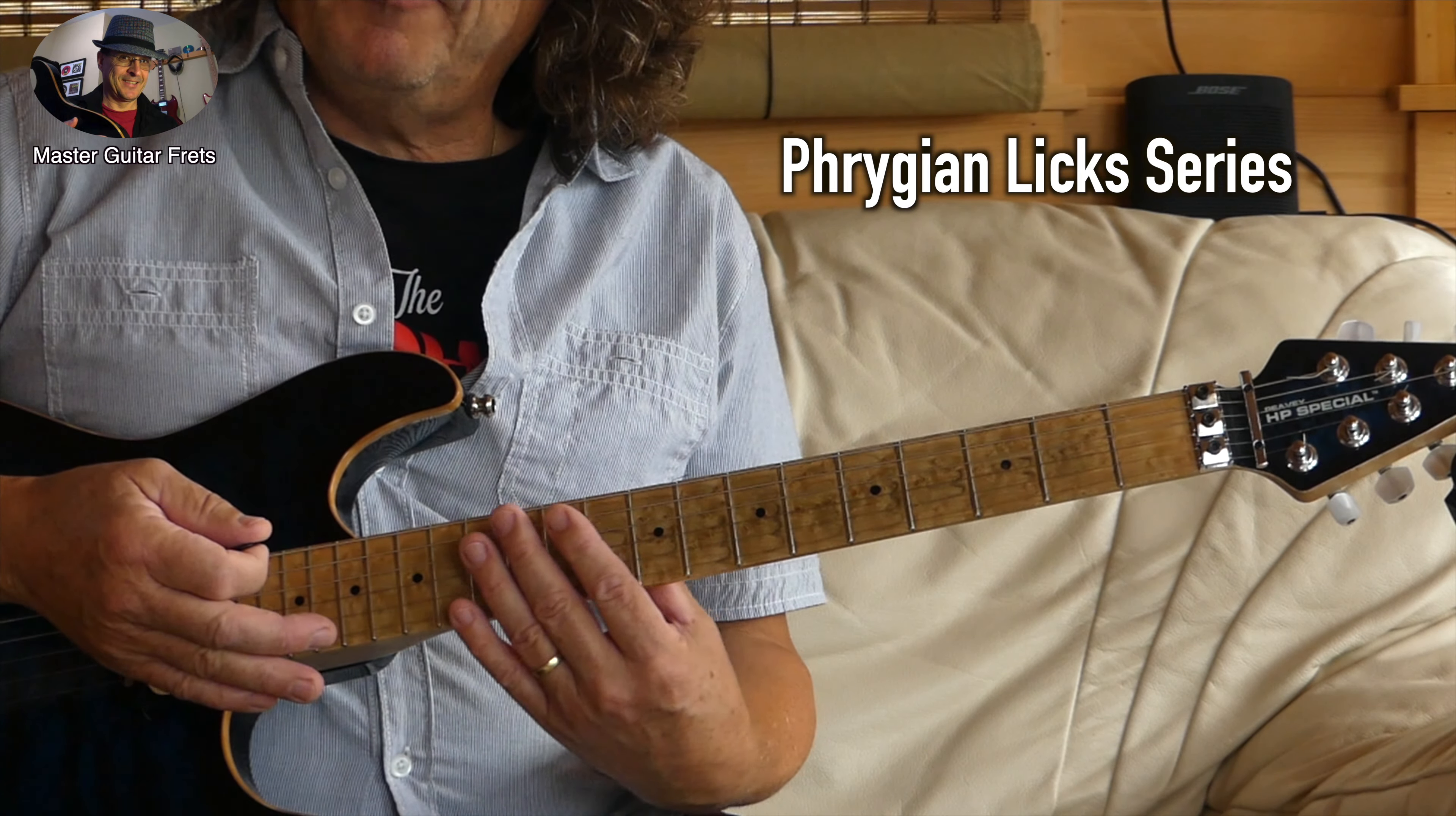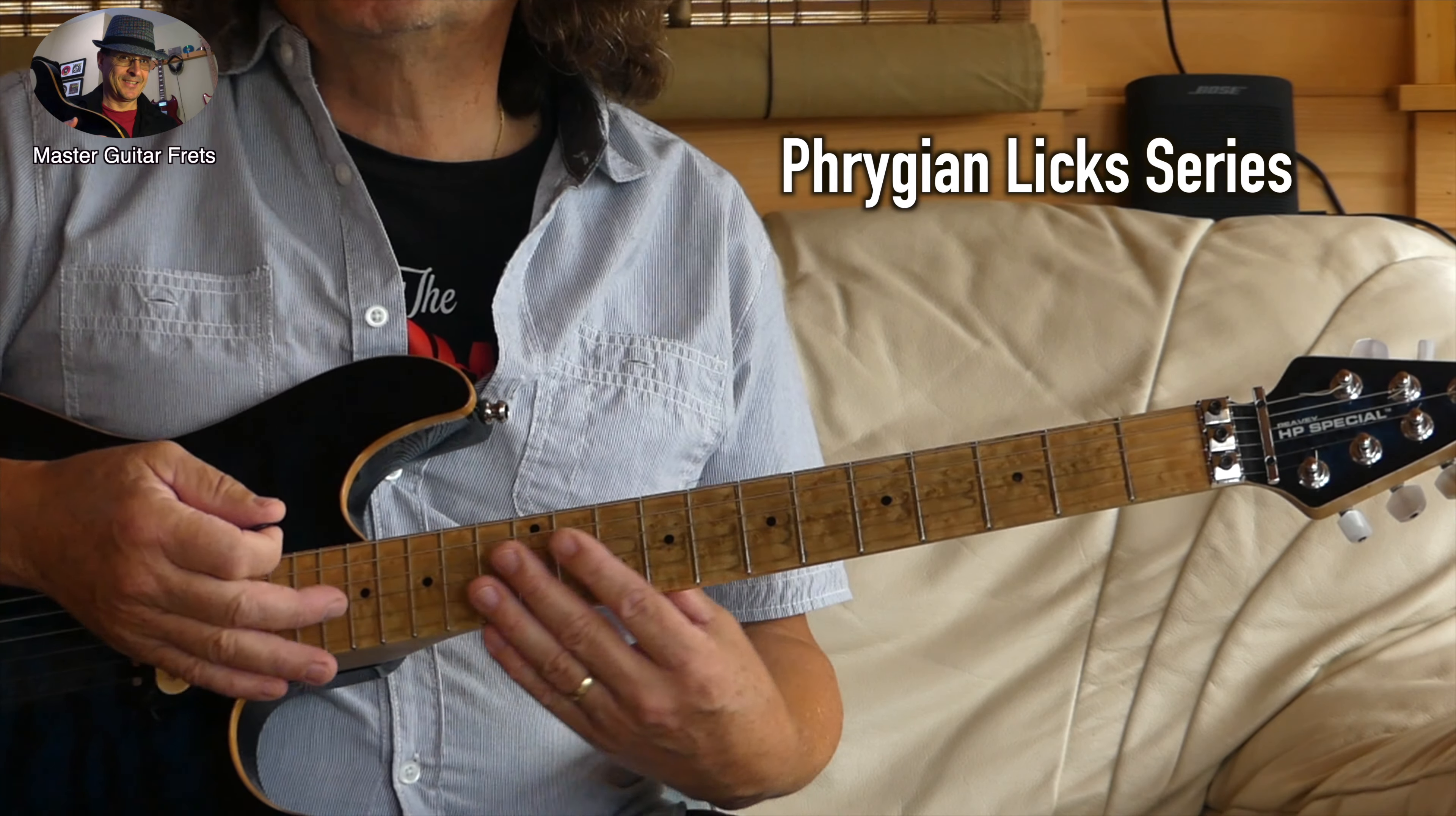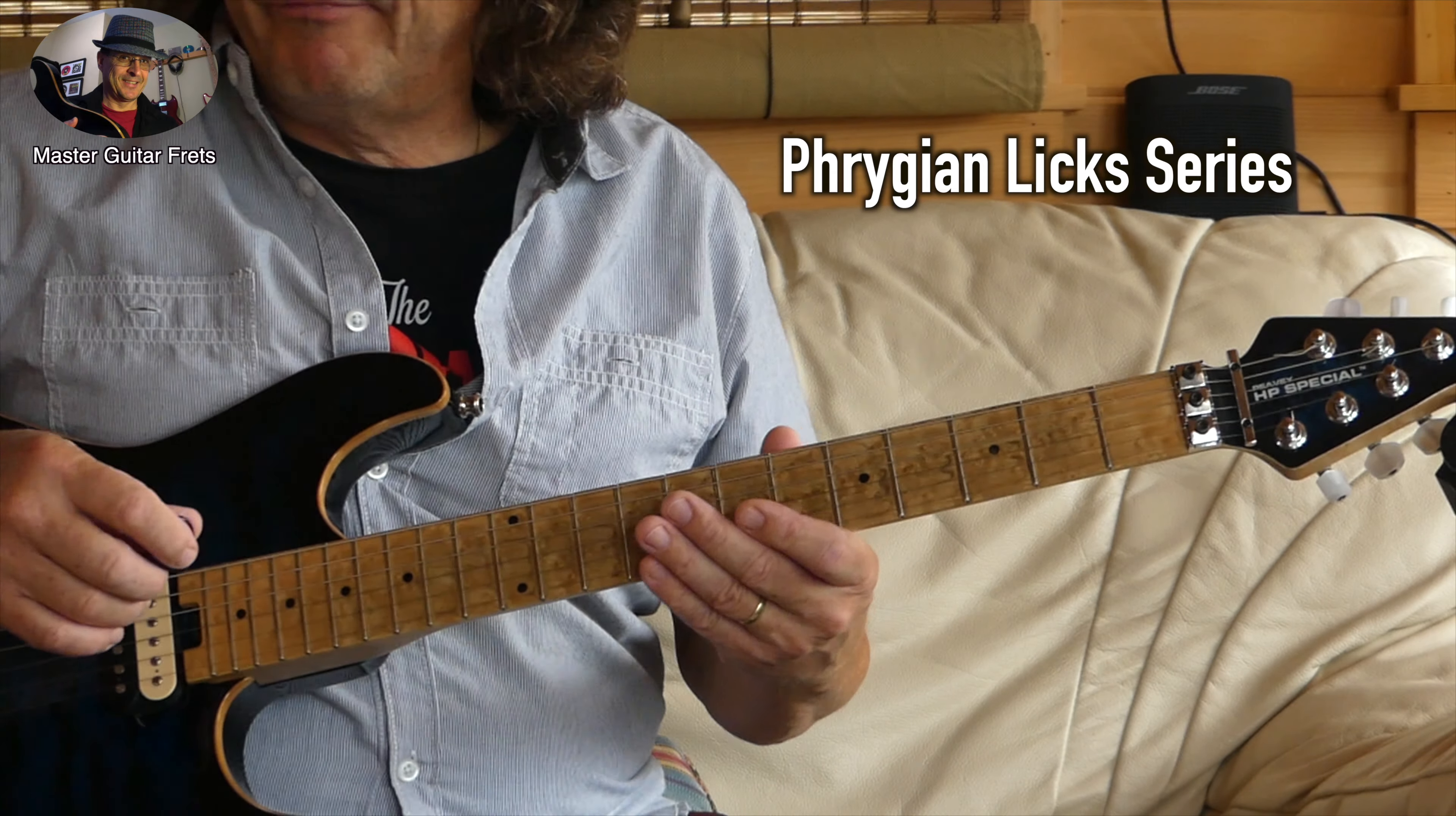The solo is in different positions of the Phrygian scale, so I'm going to show you which lick is in what position. We're not doing them all, but I think we're covering about three or four.